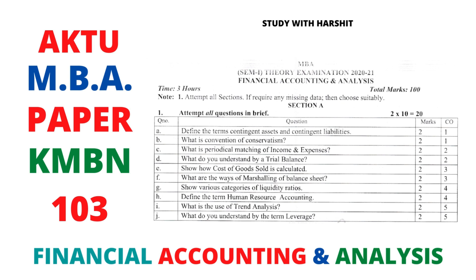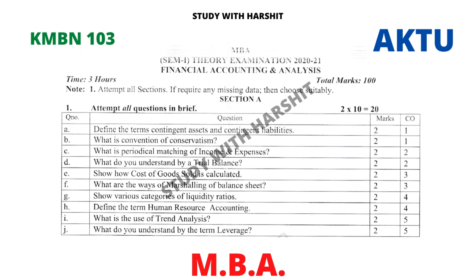Hello friends, welcome to our YouTube channel Study with Harshit. Today I am going to share with you AKTU MBA paper, paper code KMBN103, Financial Accounting and Analysis. Section A, Question A: Define the terms contingent assets and contingent liabilities.